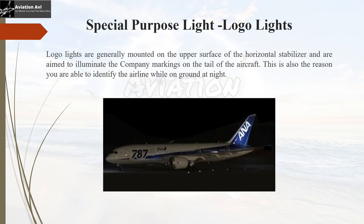Last but not least are the special-purpose logo lights. Logo lights are generally mounted on the upper surface of the horizontal stabilizer and are directed to illuminate the company markings on the tail of the aircraft. This is the reason you are able to identify an airline while it is on the ground at night.